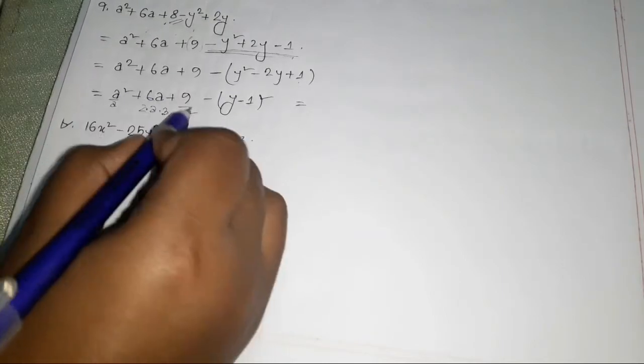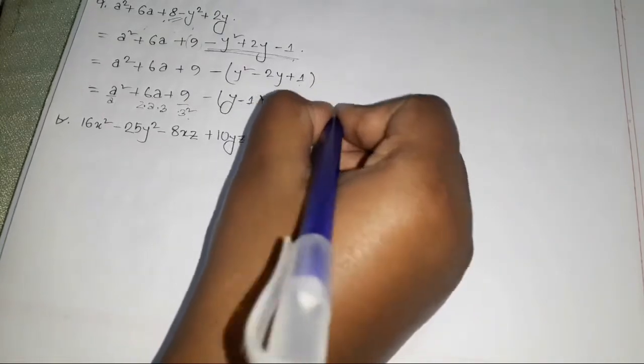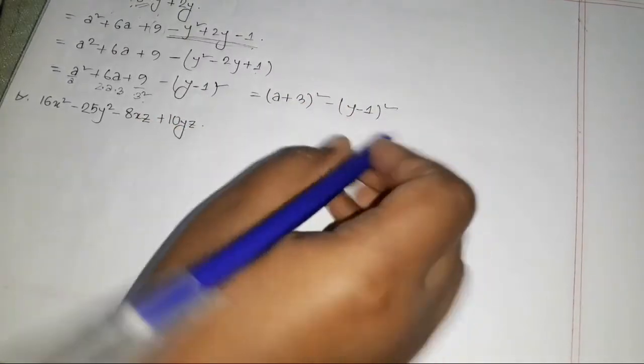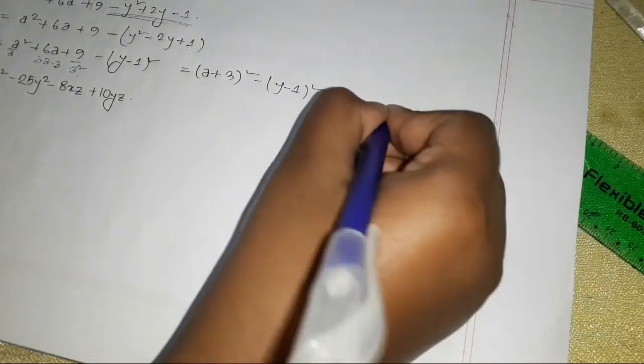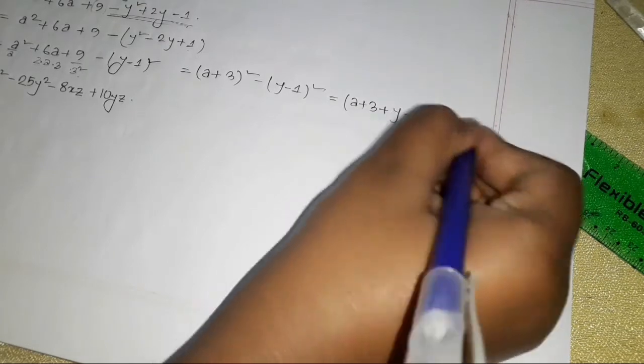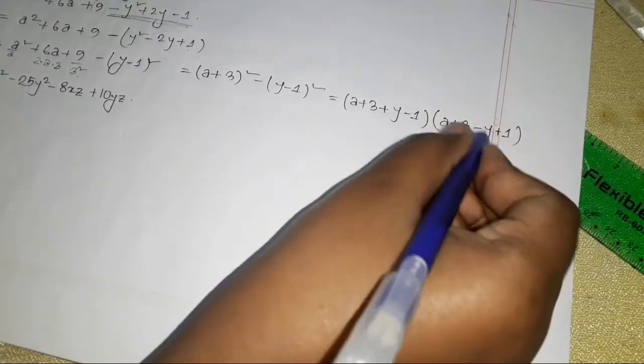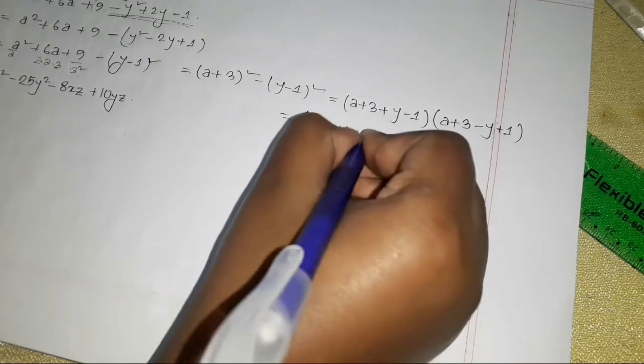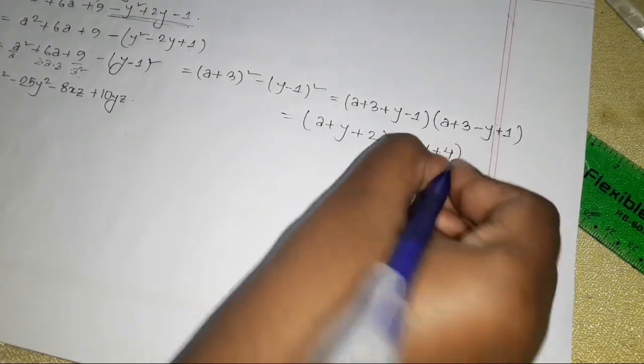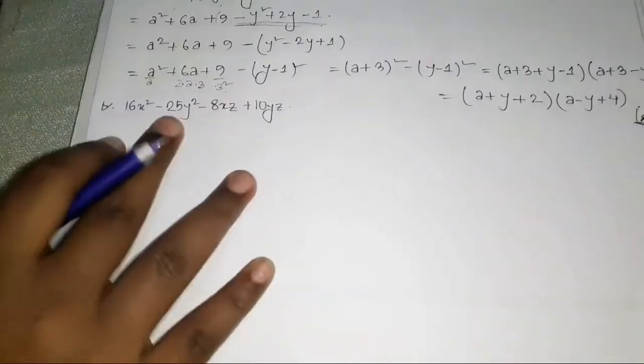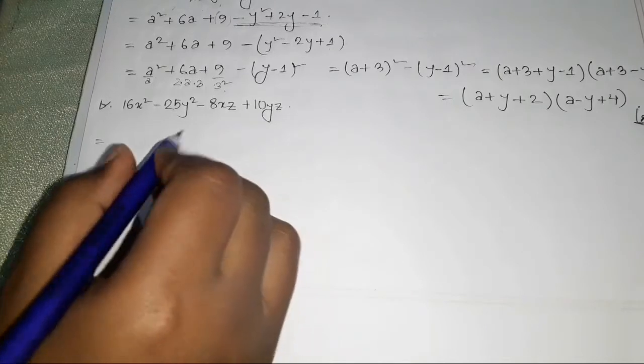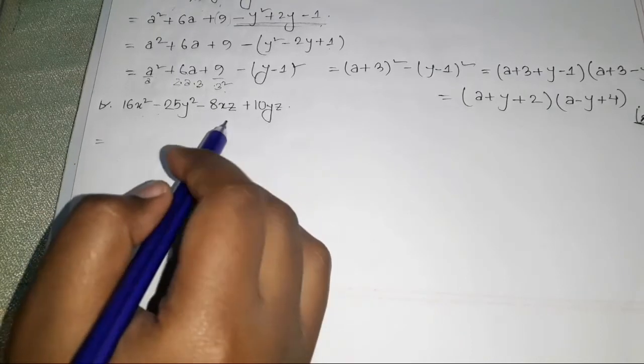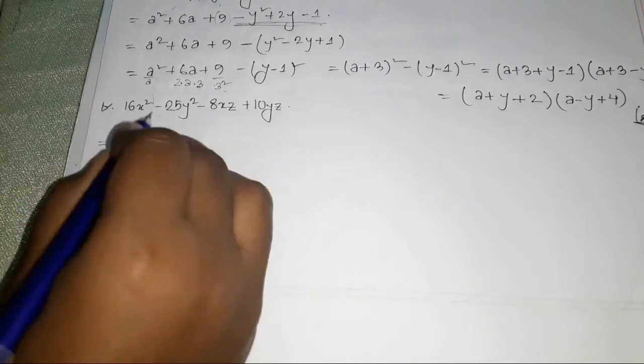Using a² - b² formula, this becomes (a + 3 + y - 1)(a + 3 - y + 1), which equals (a + y + 2)(a - y + 4). That is the answer.